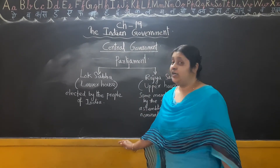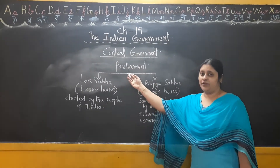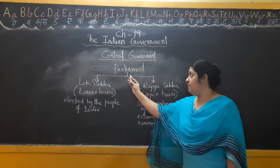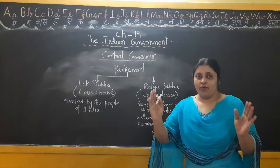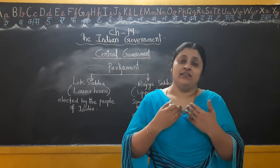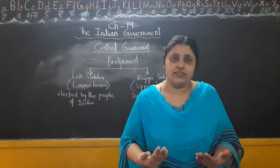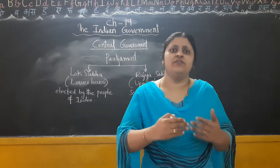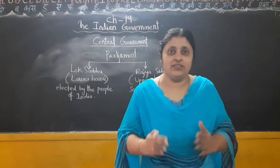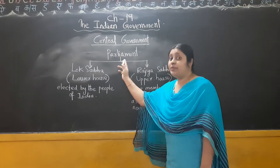In the central government, one lawmaking body is there, known as Parliament. Parliament is the lawmaking body of the central government — they make new laws for our country and they amend existing laws. Amendment means to change: if a change is needed in a particular law, they will amend it.